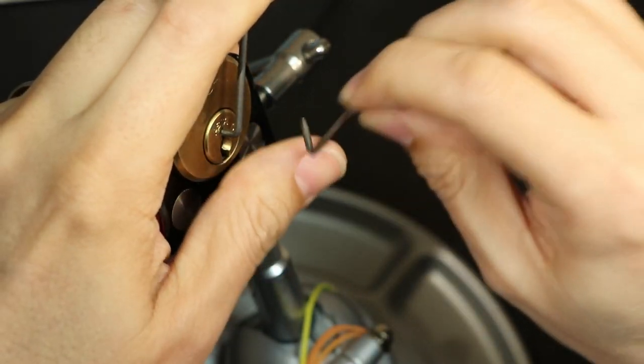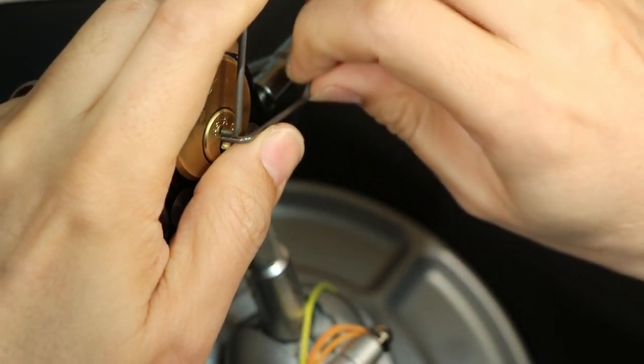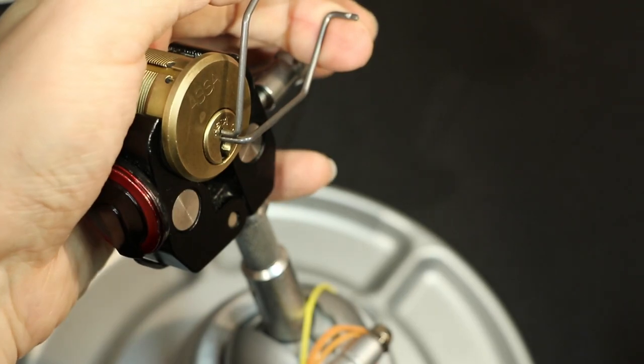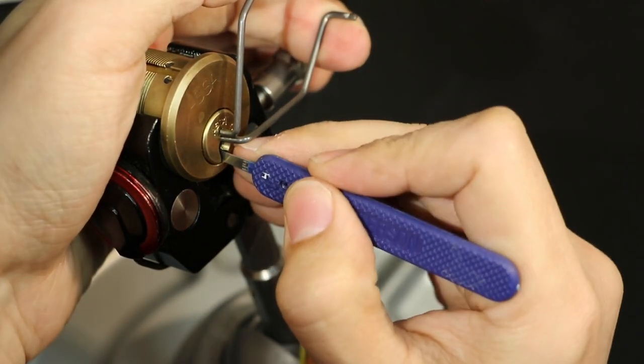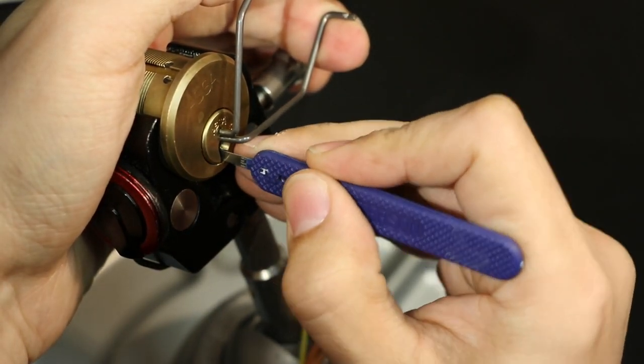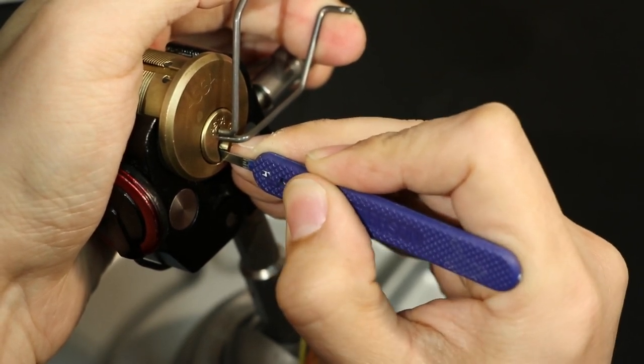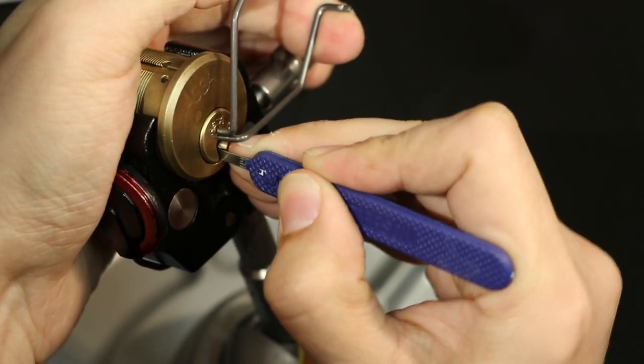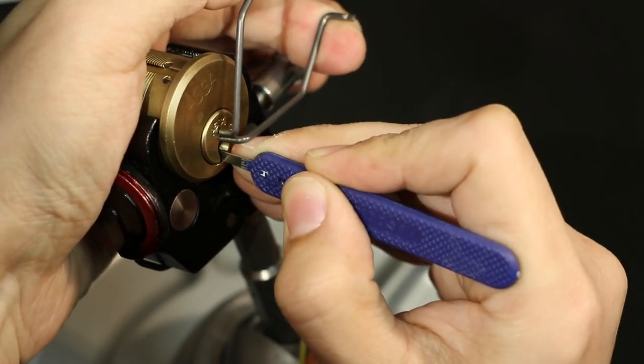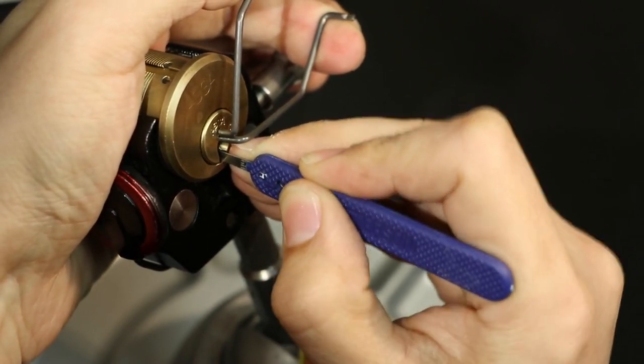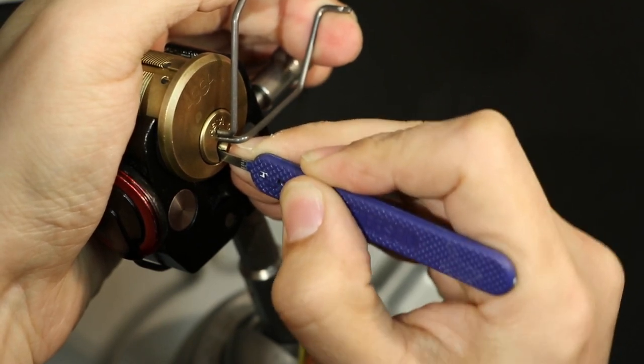So maybe what we do is we'll go ahead and show a float on number six to get us a little bit more control. There we go. You can hear it's moving now. And I'll go front to back on it and try to get that pin to go up into the wording. I thought I got it, but no, it's still not jiggling.